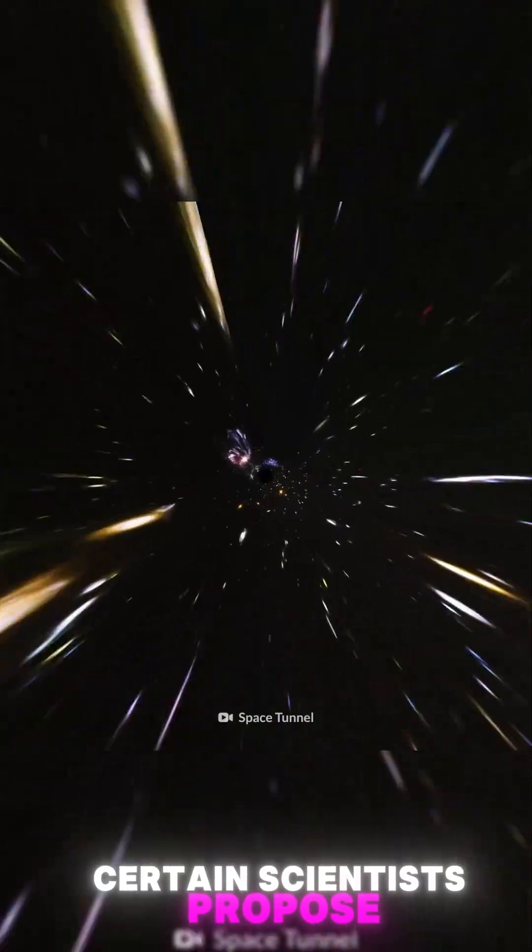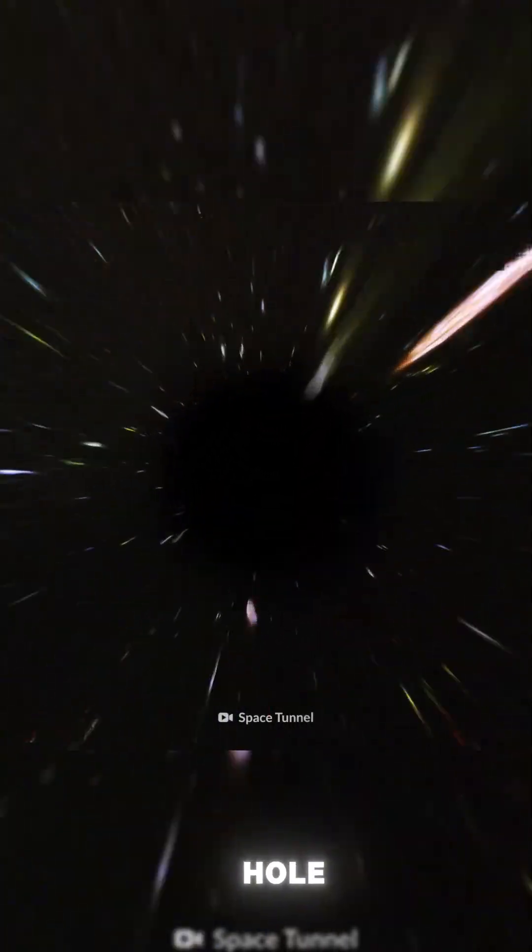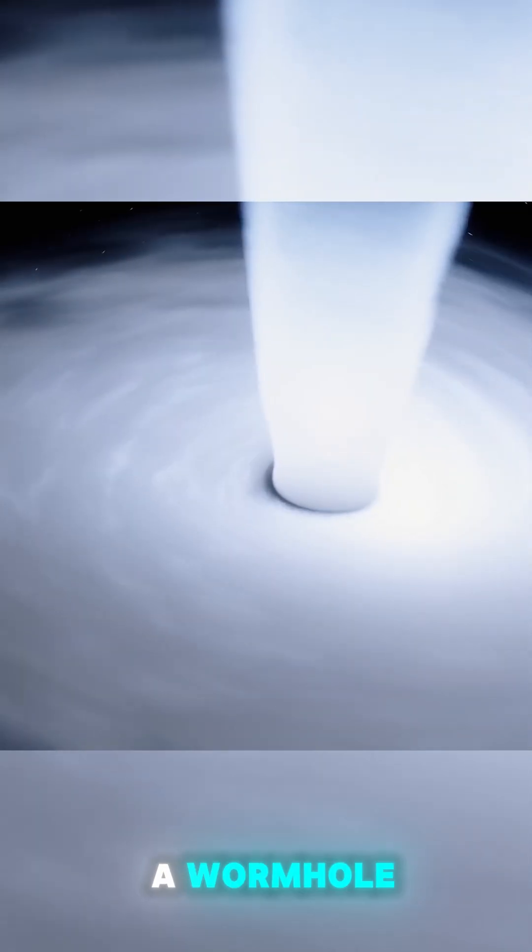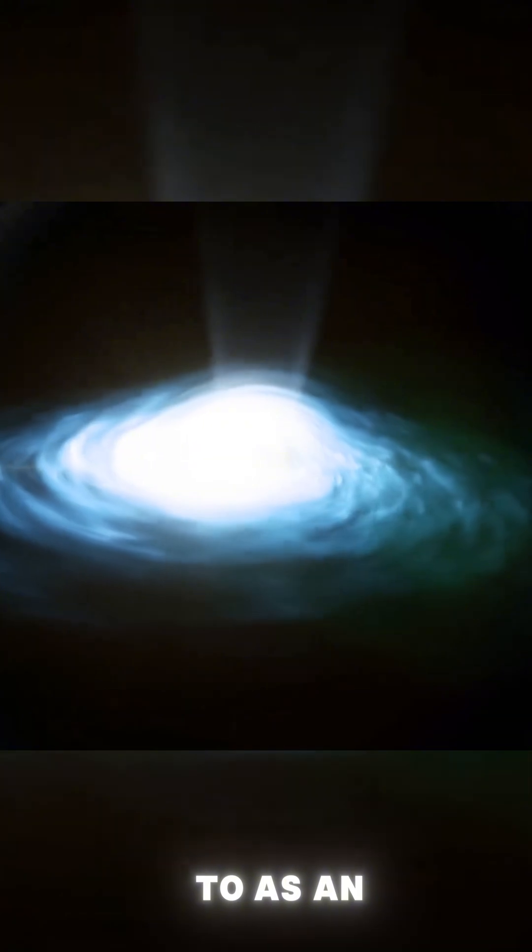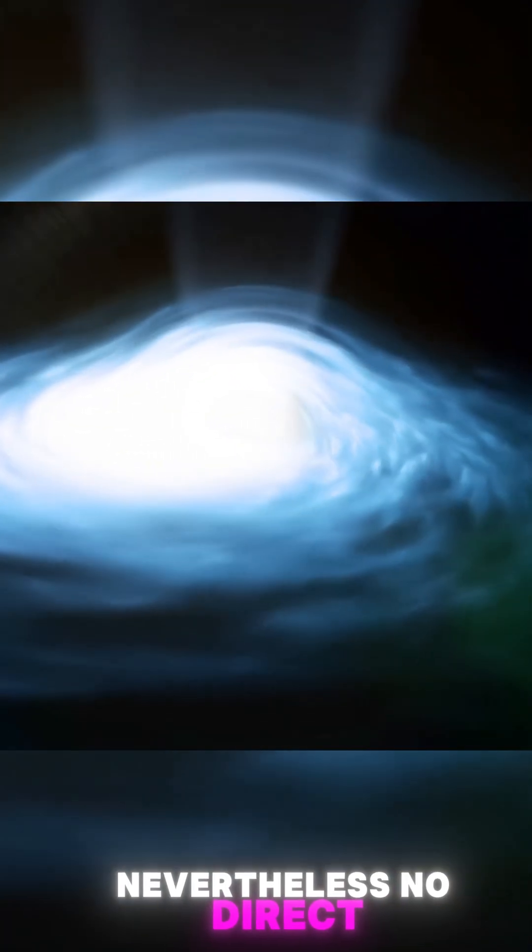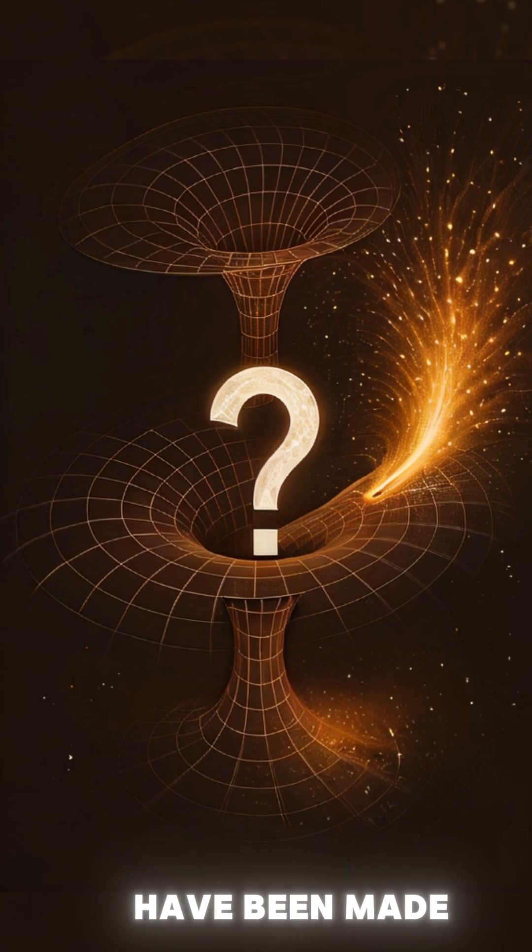Certain scientists propose that a white hole may serve as the exit point for a black hole, potentially connected by a wormhole that forms what is referred to as an Einstein-Rosen bridge. Nevertheless, no direct observations of white holes have been made to date.